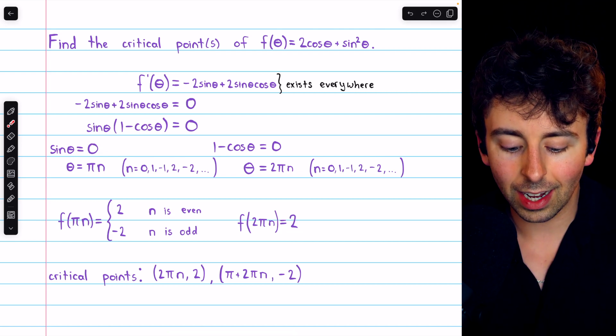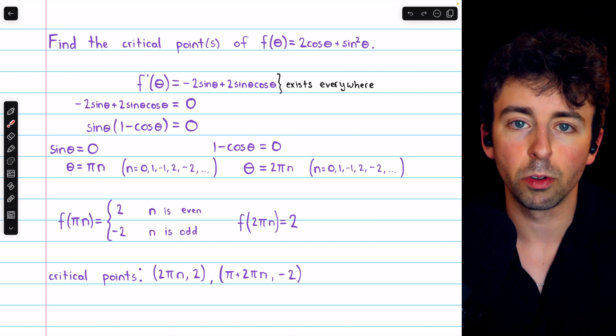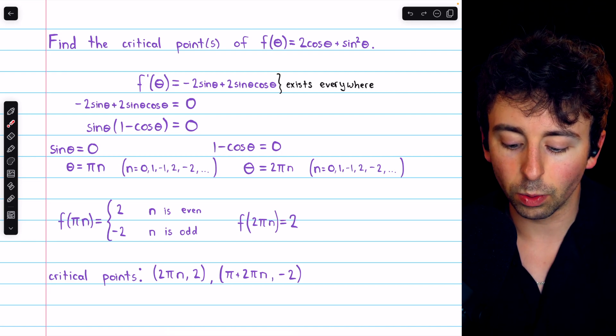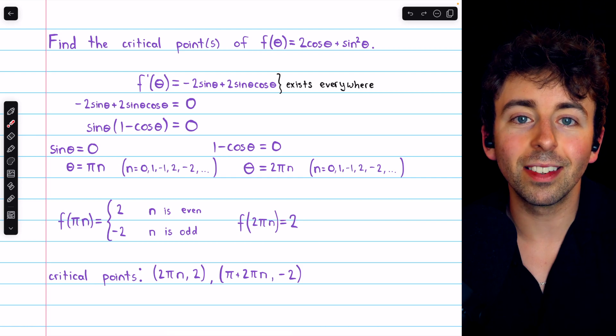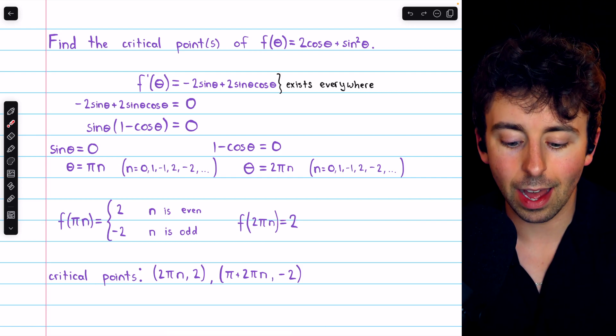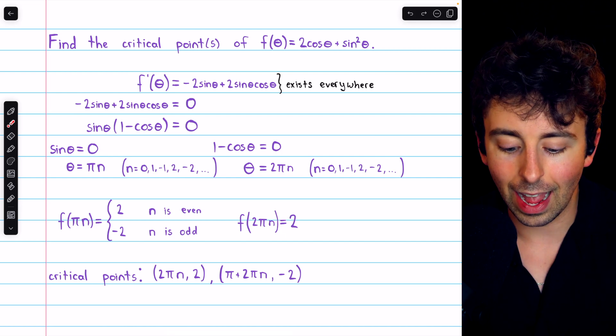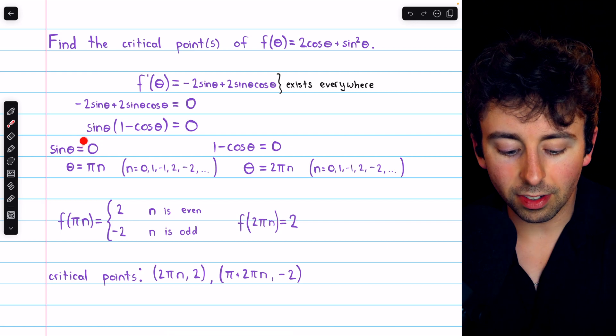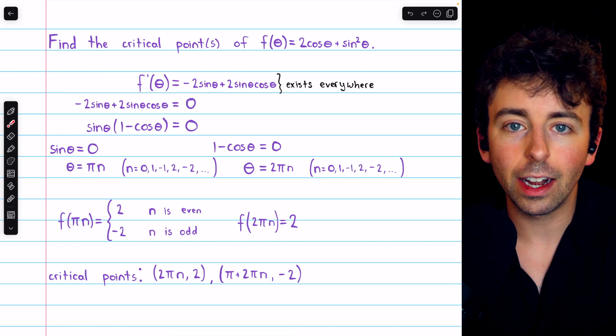We know that sin(θ) is 0 at all multiples of π. Hopefully, you know your unit circle. And we know that 1 - cos(θ) is equal to 0 at all even multiples of π, because it's at even multiples of π where cosine is equal to positive 1. Hence, 1 - cos would be equal to 0. So sin(θ) is equal to 0 when θ = πn for any integer n.